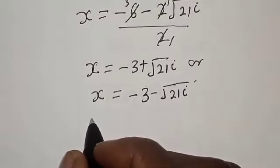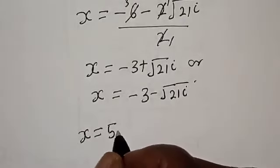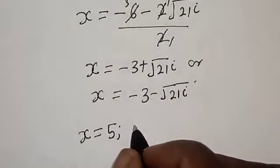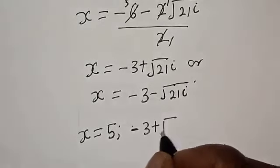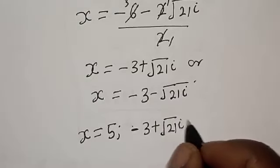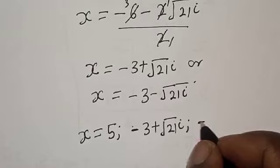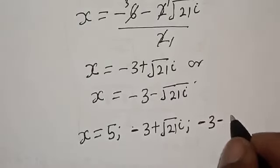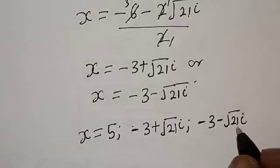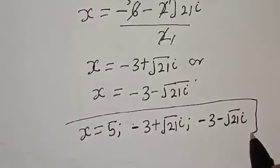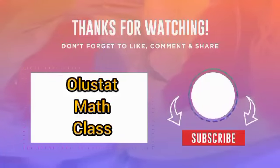Therefore our final answers — the roots of this equation — are: s equal to 5, s equal to minus 3 plus root 21 · i, and s equal to minus 3 minus root 21 · i. That is our final answer. If you have enjoyed the class, please don't forget to like, share, comment and subscribe. Thank you.